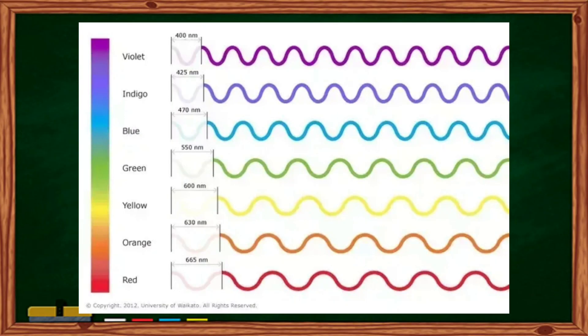Among the seven colors, makikita natin na ang violet ang may pinakamataas na frequency, pero siya naman ang may pinakamaiksing wavelength. While yung red, siya yung may pinakamababang frequency but the longest wavelength. Very obvious here na yung frequency ng light is directly related to the wavelength — as the frequency increases, the wavelength decreases. And these are the reasons why red colors have been used mainly as a color in various commercial logos.